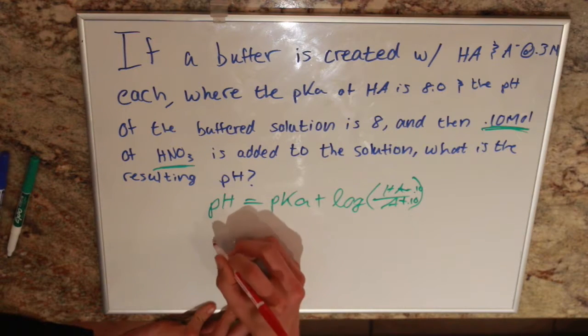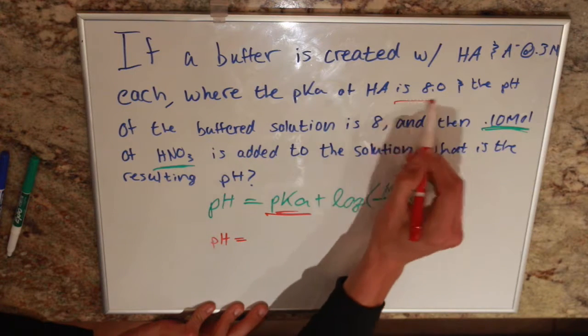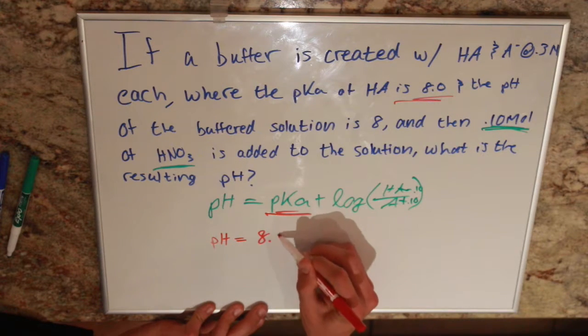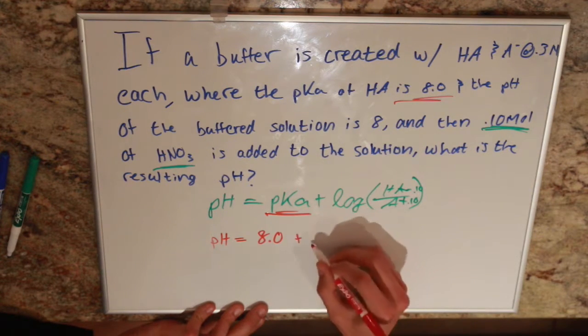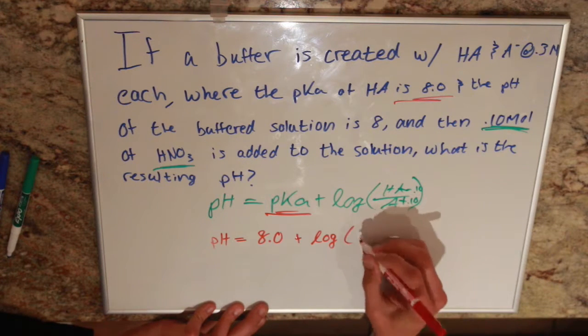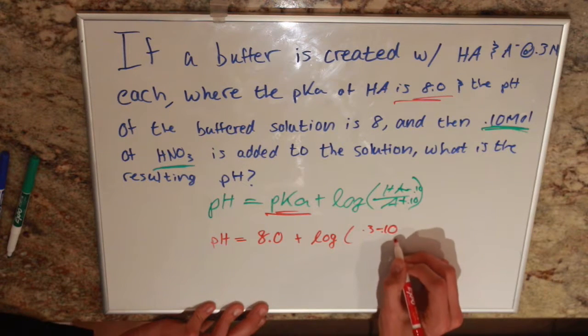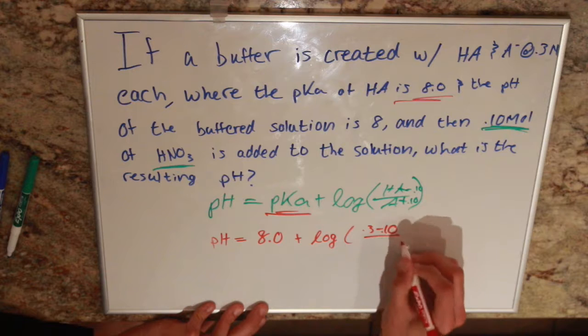So, we have our pH equals pKa of HA is given to us, 8, plus the log of our HA concentration, which is 0.3 minus 0.10. Because this guy is a base, this guy is an acid, so it's going to neutralize him.